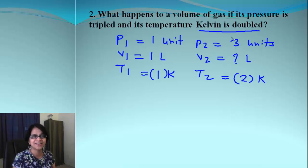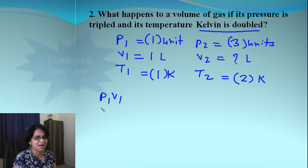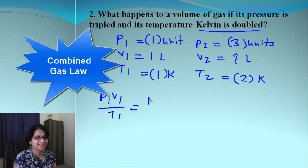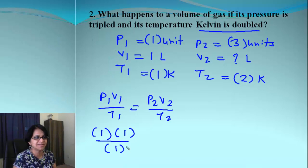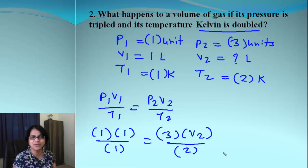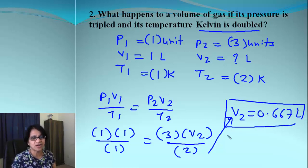So let's plug and chug the values in our combined gas law. There we go. It's one times one divided by one equals three times V2 divided by two. And when we solve for V2, what do we get? We get 0.667 liters.